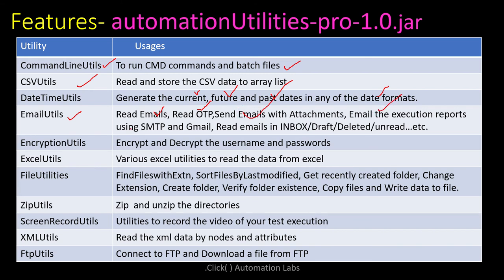Email Utilities is one of the best utilities — you can read emails, read OTPs, and send emails with attachments including execution reports via SMTP and Gmail. You can read emails from inbox, drafts, deleted, and unread folders. Encryption Utilities helps encrypt and decrypt strings — useful for securing passwords or usernames. Excel Utilities reads Excel data using Apache POI, with methods to read by column name, column index, or rows.